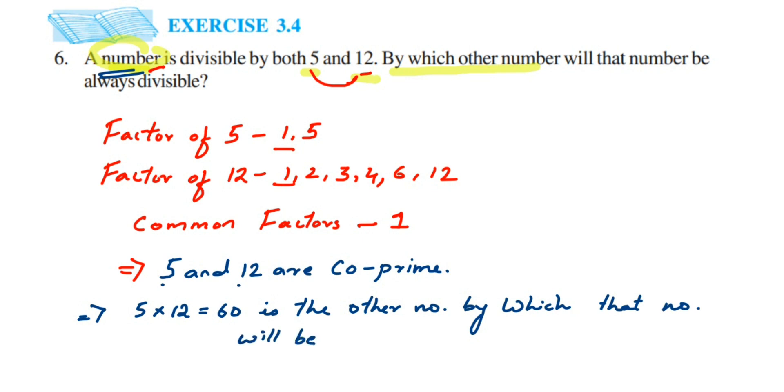It will be always divisible, we can write down. Always divisible. Because in the question they have asked by which number it is always divisible. So it is always divisible by the product of 5 and 12, which is 60.